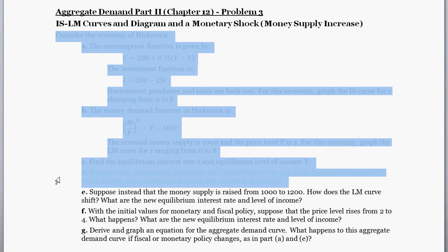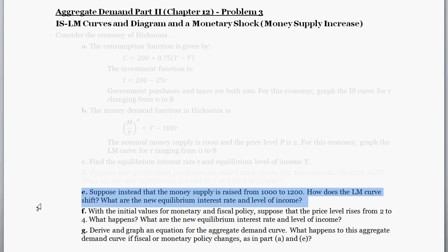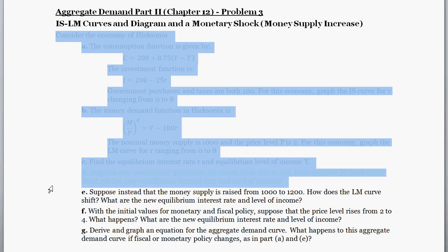So this video is kind of part of other videos. Previous to this, I've gone through previous parts of this question. And now we're starting with Part E, which reads, Suppose instead that the money supply is raised from $1,000 to $1,200. How does the LM curve shift? And what is the new equilibrium interest rate and level of income? If you want to see everything that led up to here, check out the video description where you can see links to those videos.